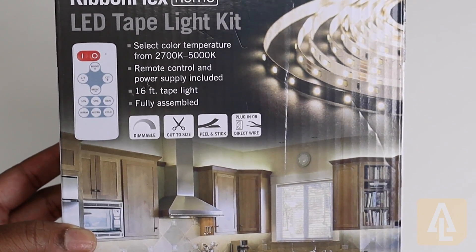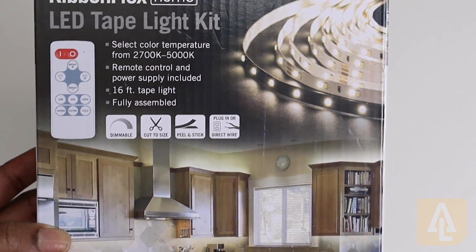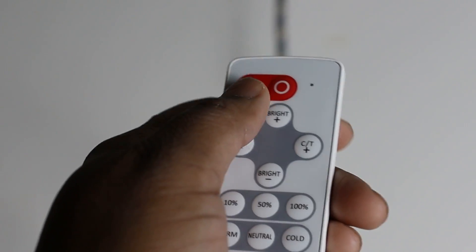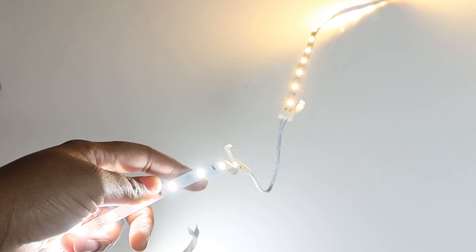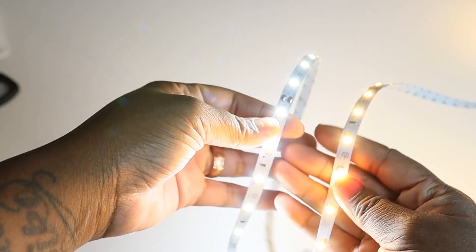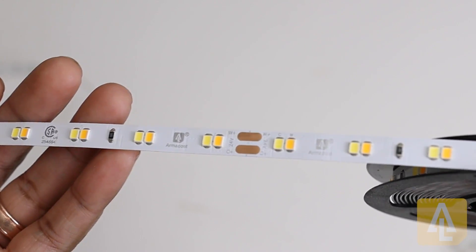Today's tutorial is going to be focused on troubleshooting in regards to when we are using connectors or jumper cables and we experience different color temperatures appearing on different sections of our tape. As you can see here, I have it connected—one side is very warm, the other side is cool. So we're just going to jump right into it.